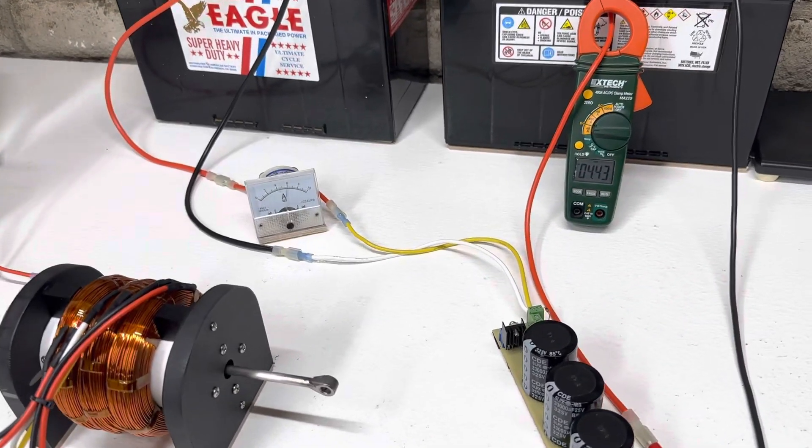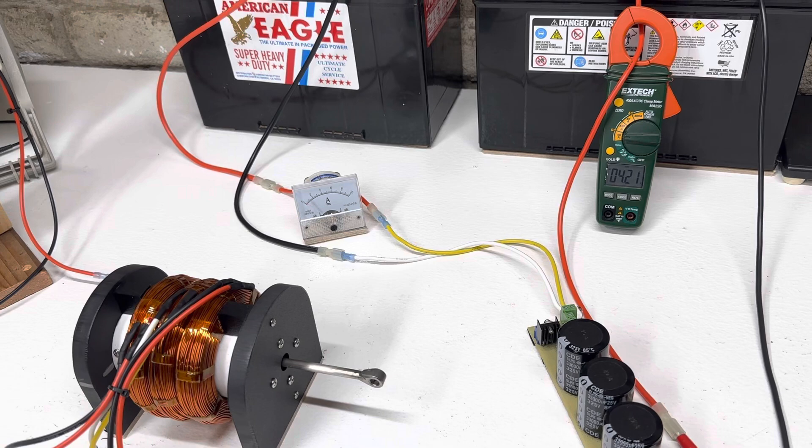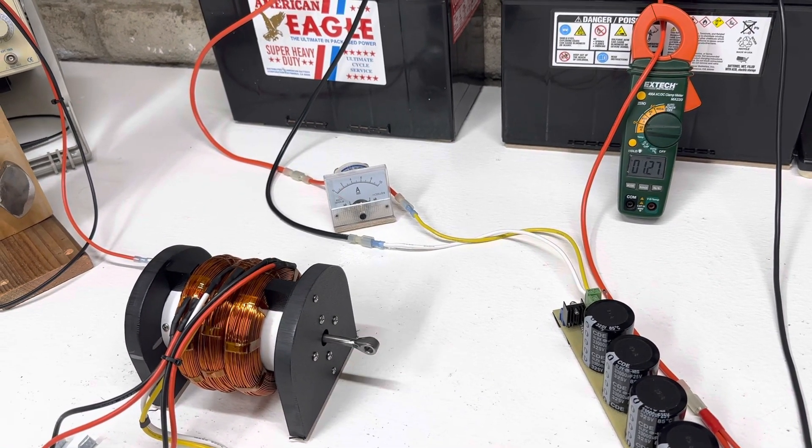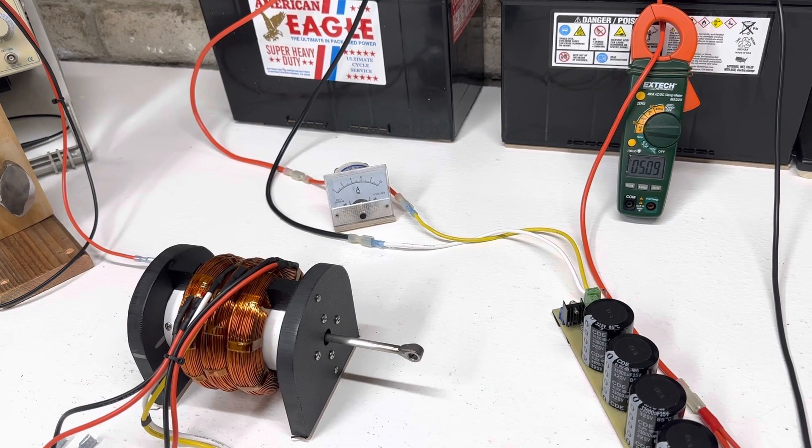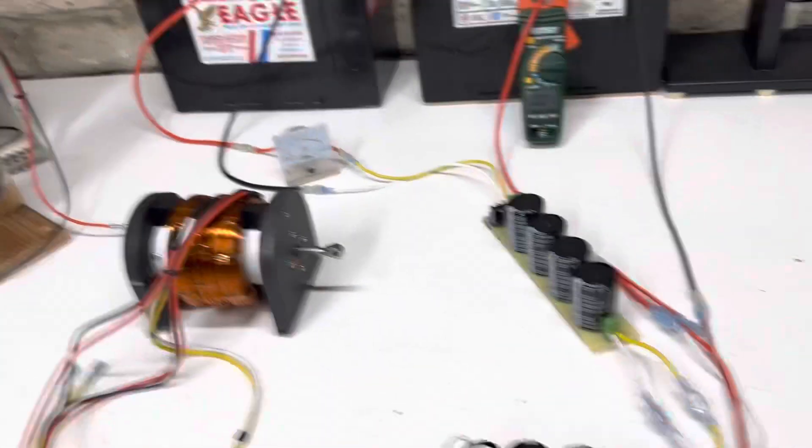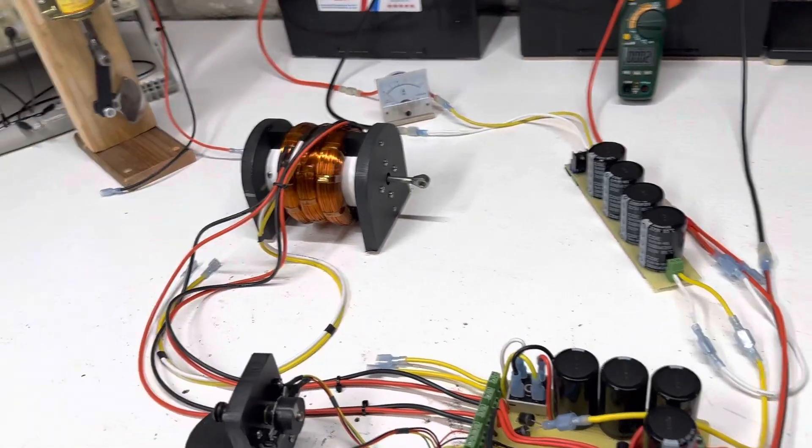So right now it's turned down. It's 4 to 5 amps, but you can see the output kind of pulses with the solenoid. So we could turn it up quite a bit more.